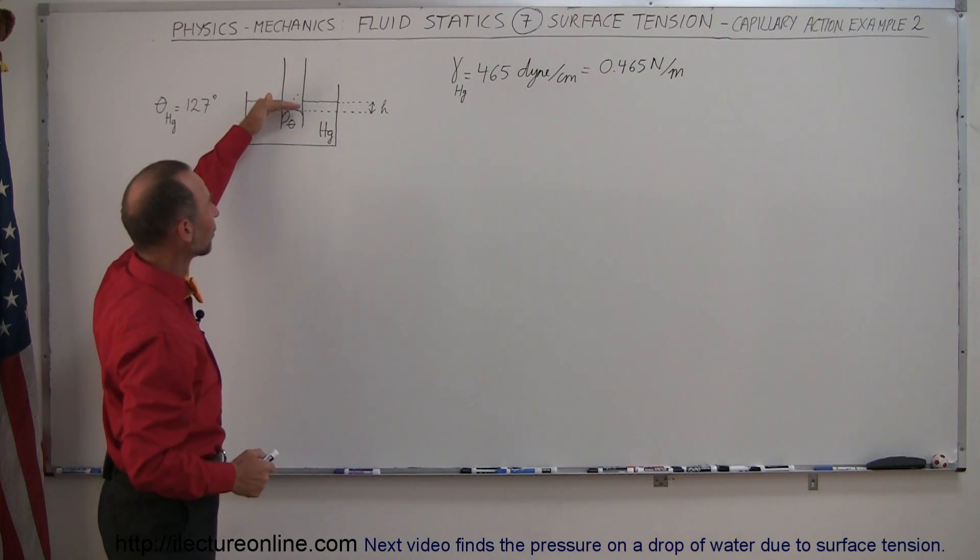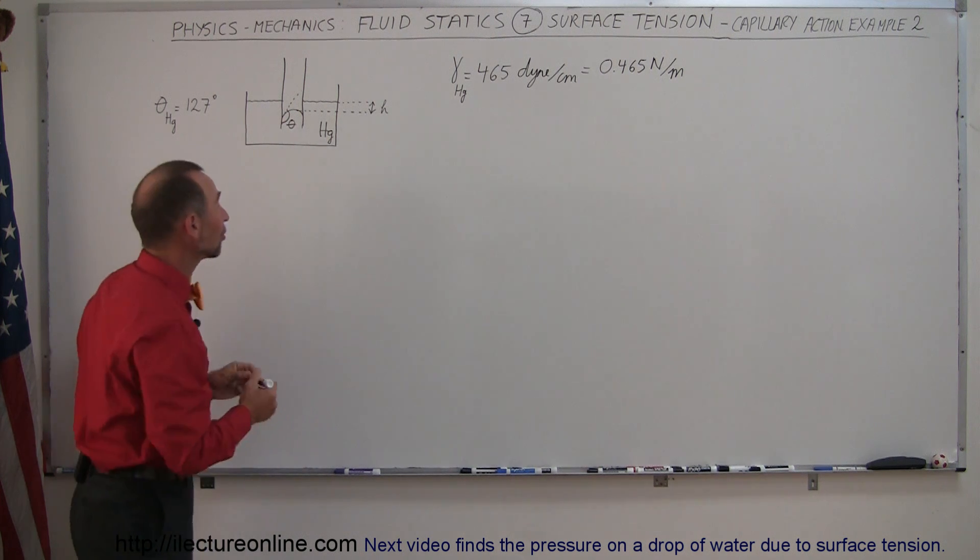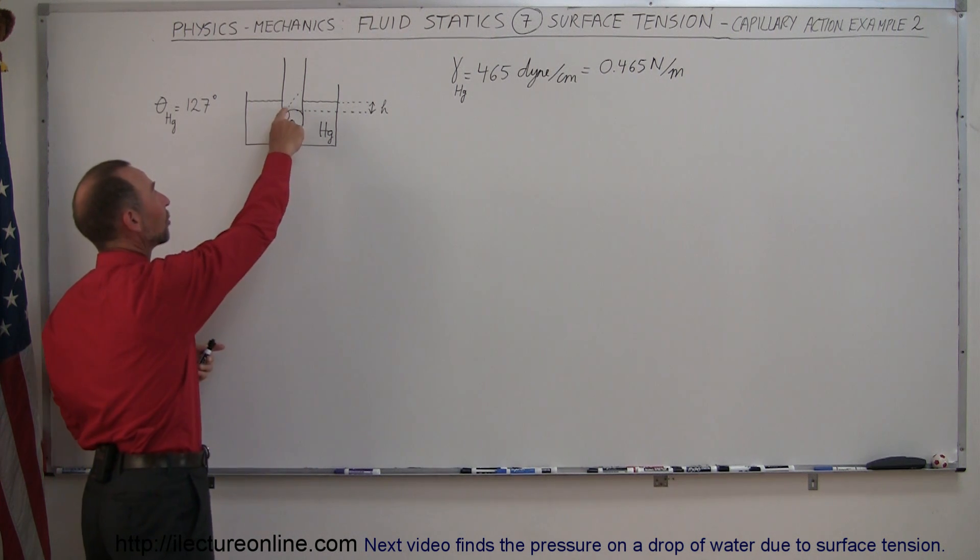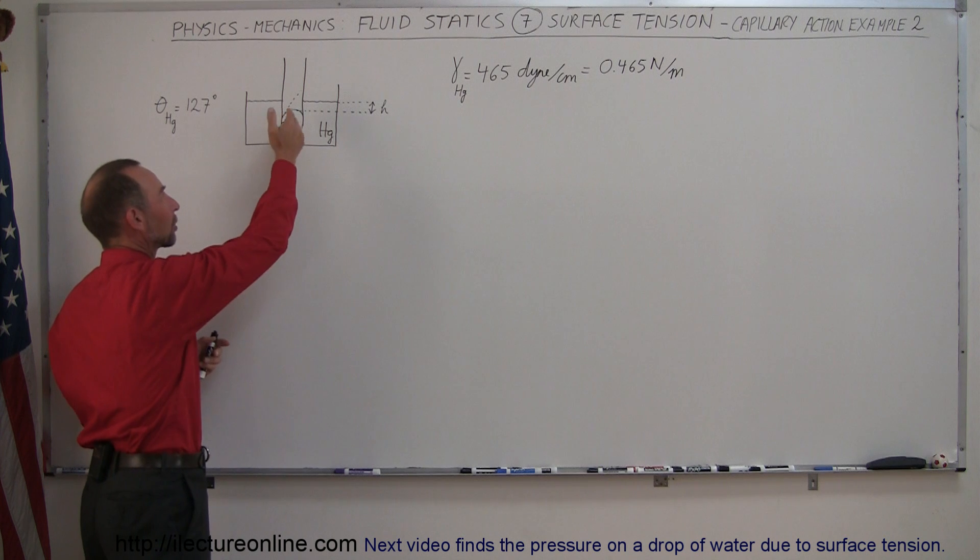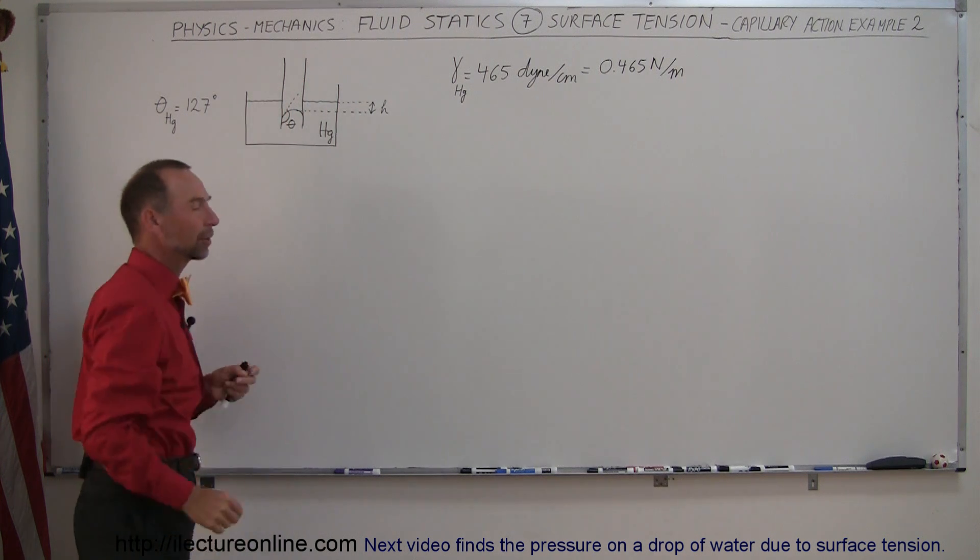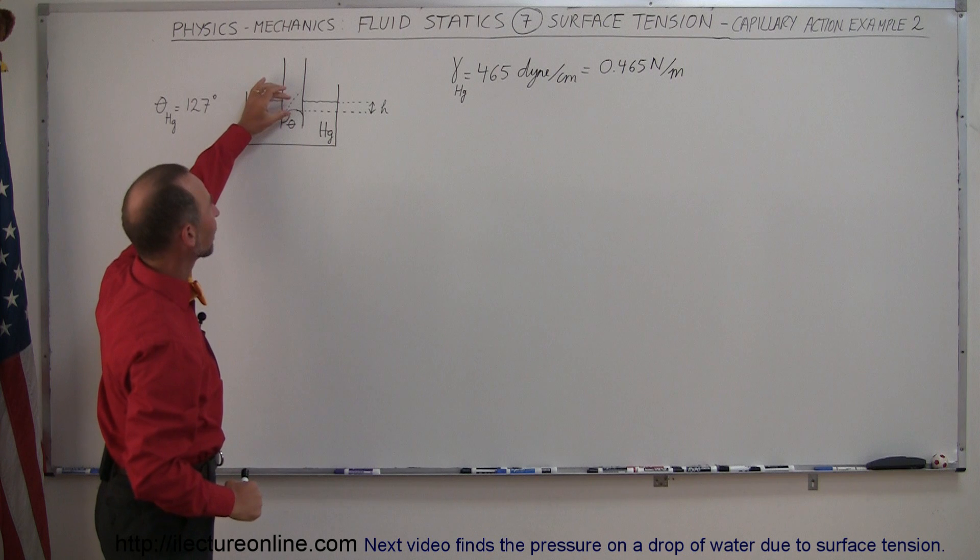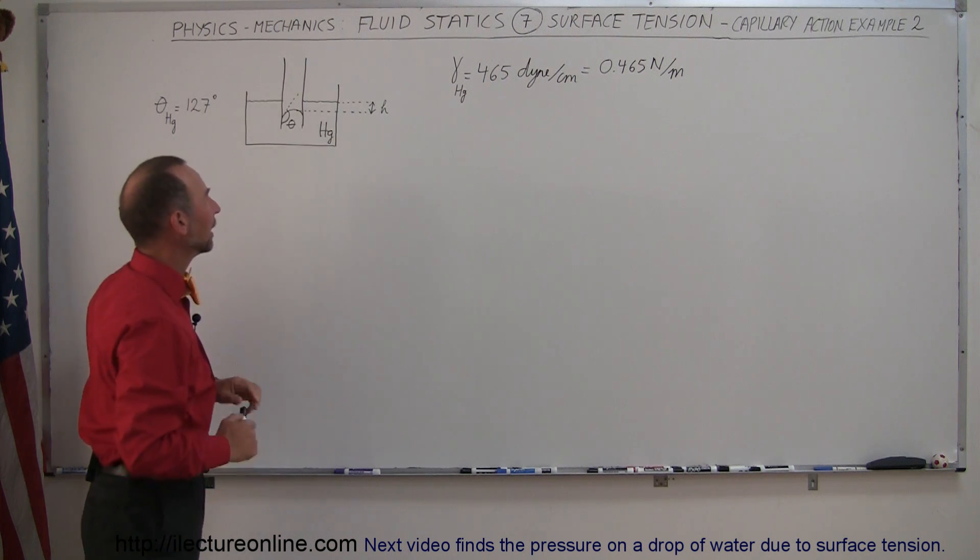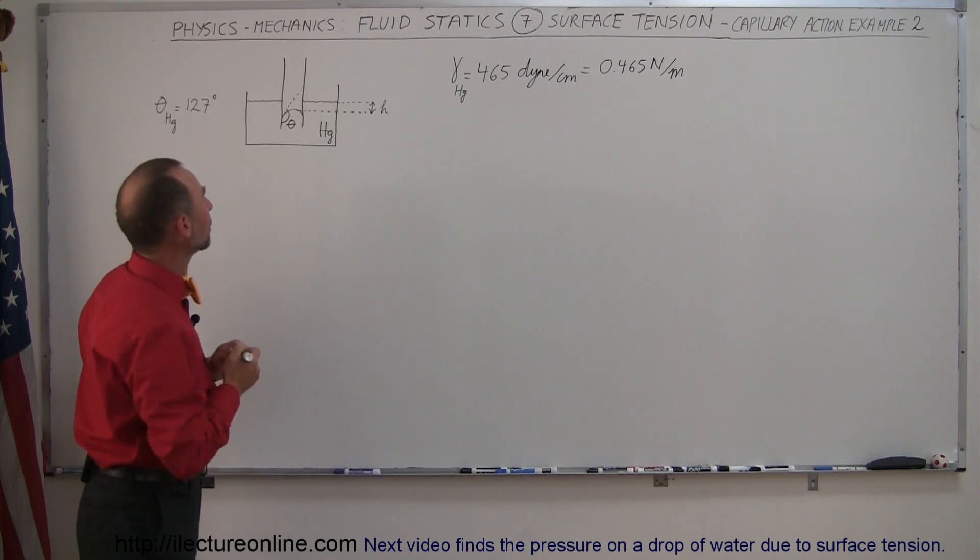What we would see inside the tube is that the mercury would actually be depressed. And the reason for that is because there's actually a repulsive force between the glass and the mercury which causes the mercury inside the capillary tube to be pushed down. And so what we're trying to do is find how far down the mercury would be pushed.